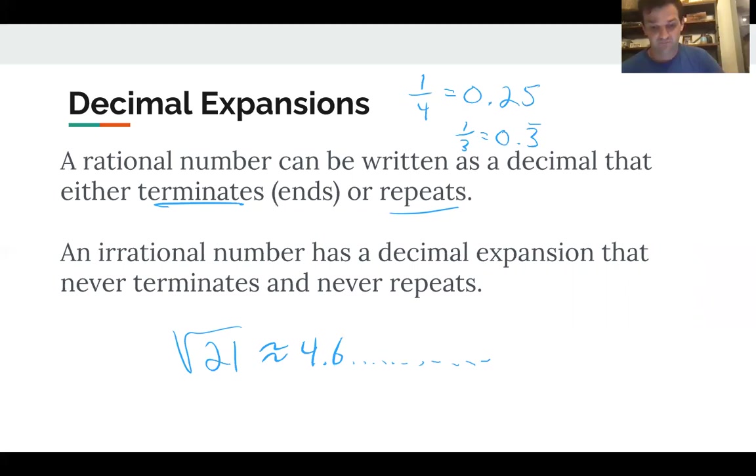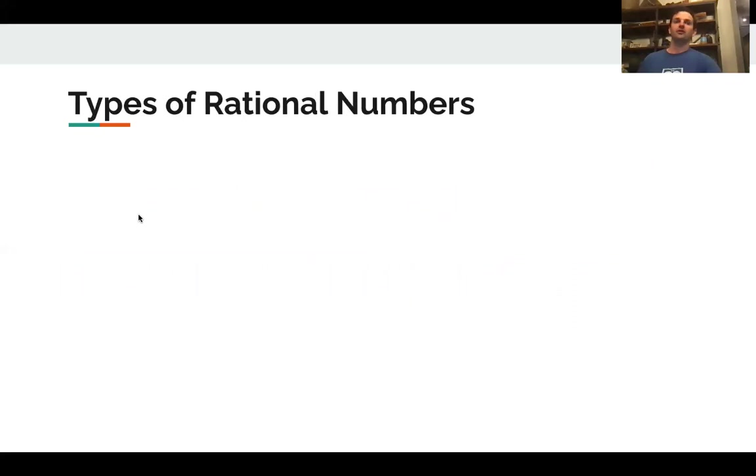Okay. So every real number is in one of those categories. Either it's rational, meaning it could be written as a fraction, or it's irrational, meaning it couldn't. But inside the category of rational numbers, there are some smaller categories. And these are simple. We've heard of these before.